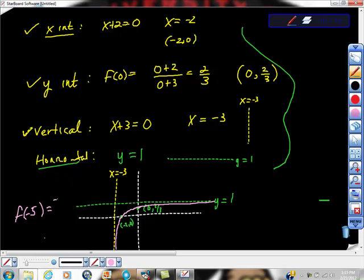And we would have negative 5, right? Plus 2 over negative 5 plus 3 is negative 3 over negative 2, which is what? Positive. Positive 3 over 2. How much is 3 over 2? 1 and a half, right?